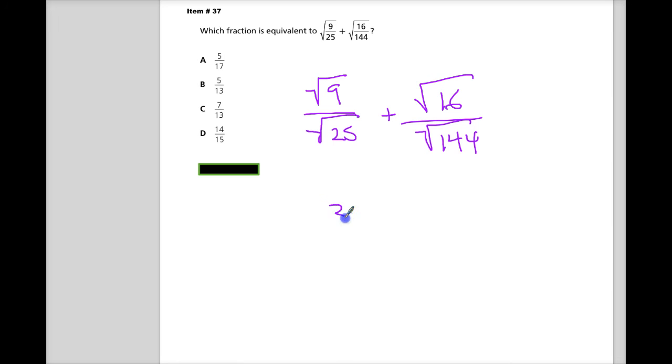So square root of 9 is 3, square root of 25 is 5, plus square root of 16 is 4, square root of 144 is 12. So all I need to do is combine these together, find a common denominator, that sort of thing.